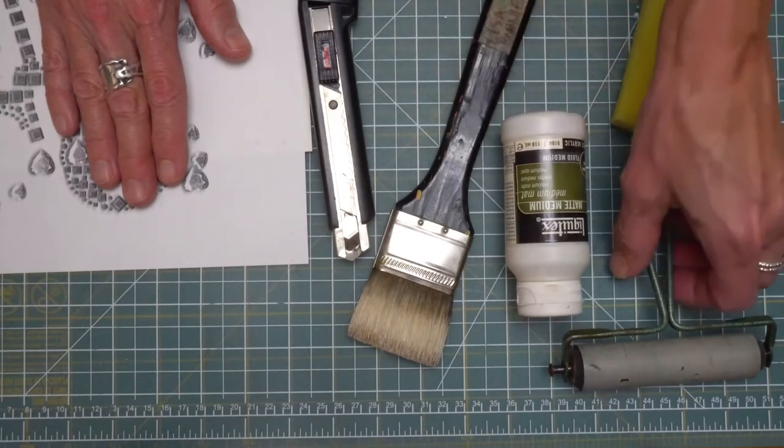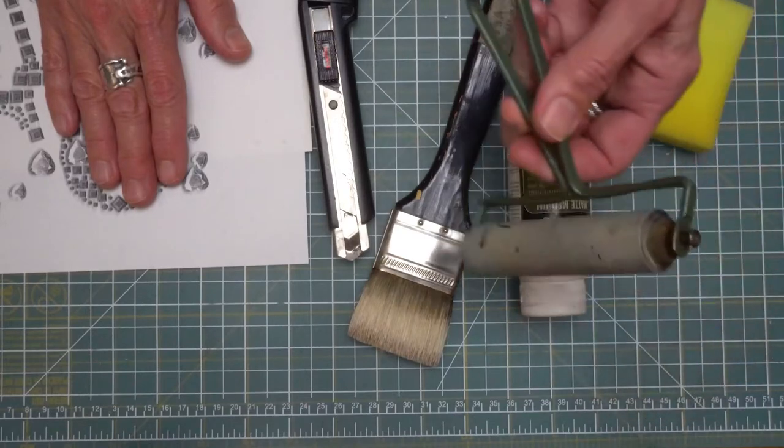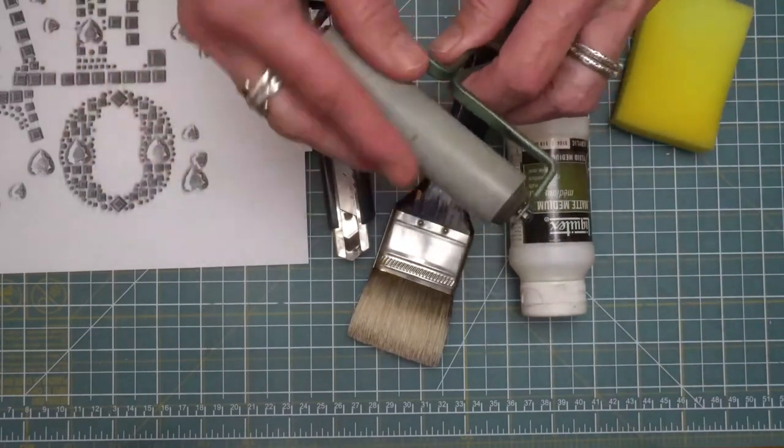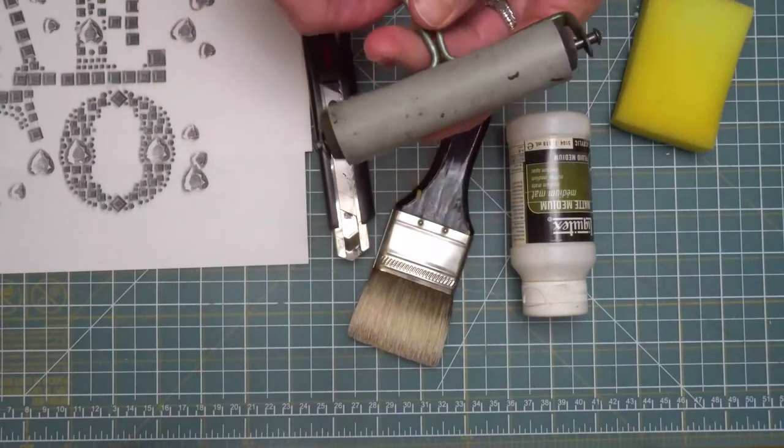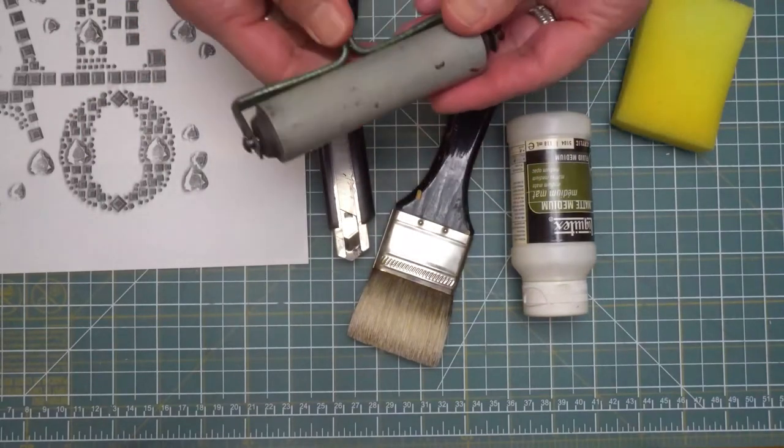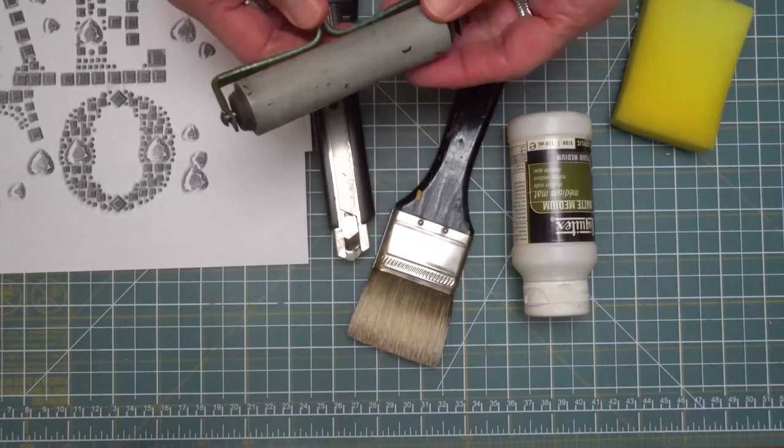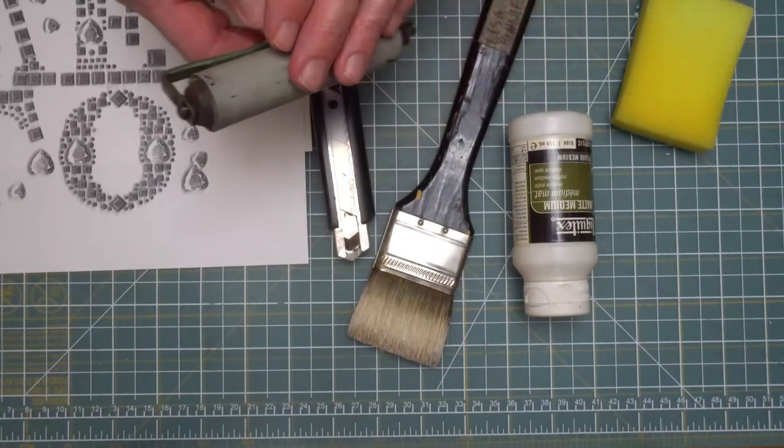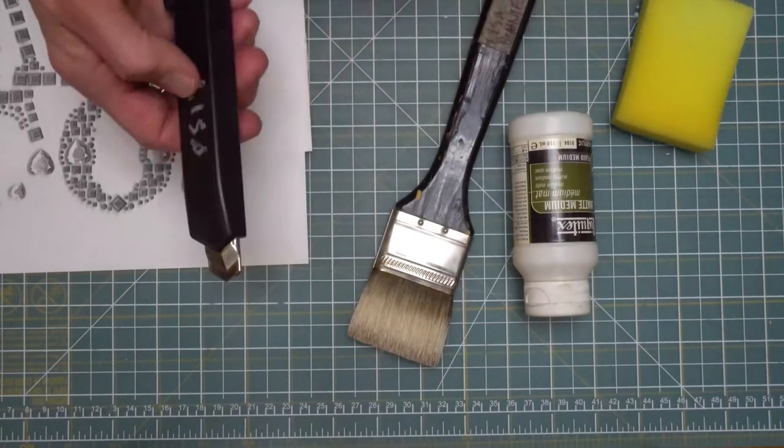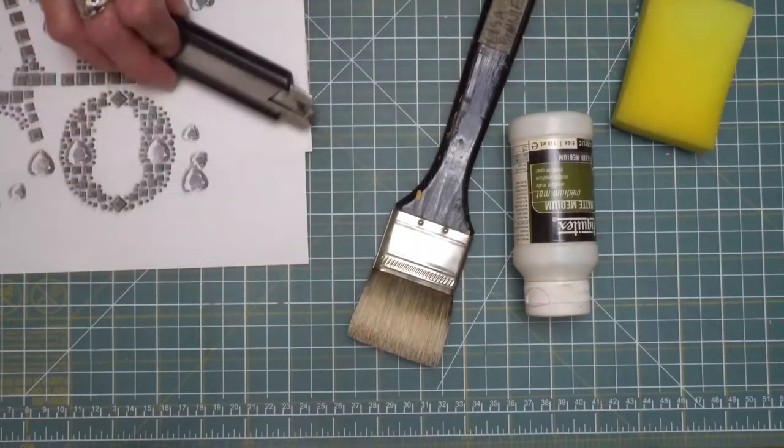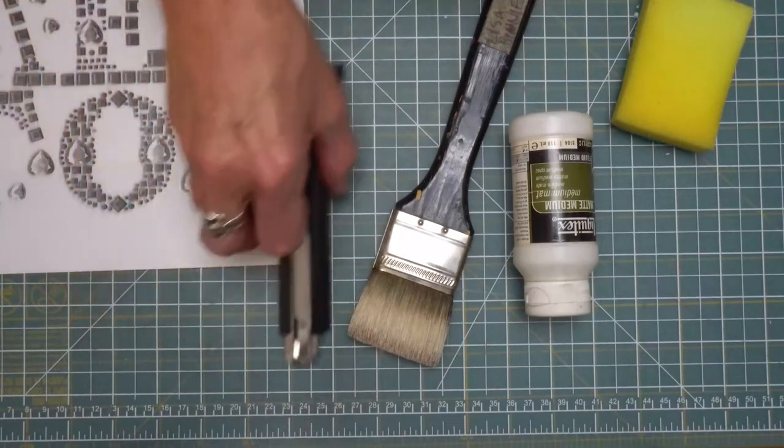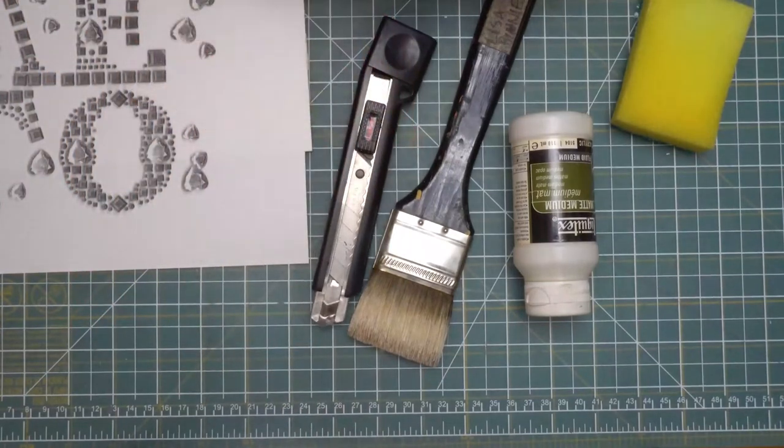Another tool that I use that not everybody has access to is a brayer. It is a hard roller and it's meant for print making. And the reason you use a brayer or some other tool that allows you to press hard against the paper, I could even use the edge of this knife later. Or you could use a credit card, a debit card, or any other kind of hard edge card.